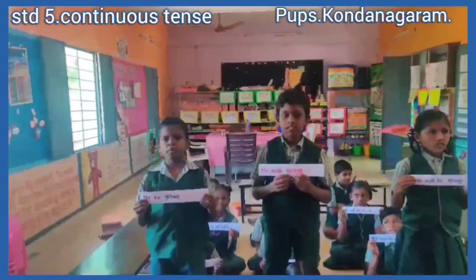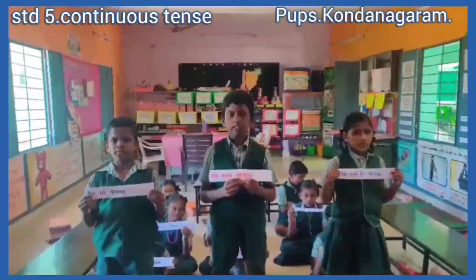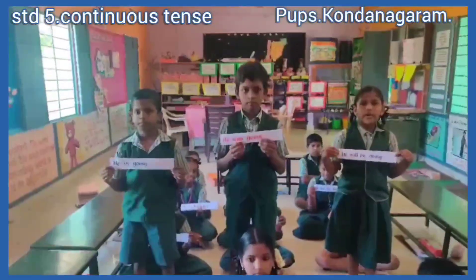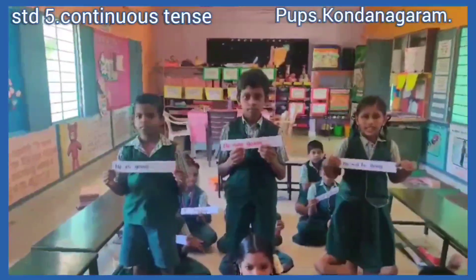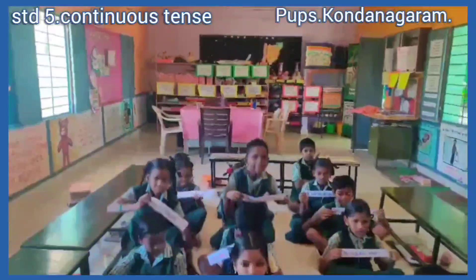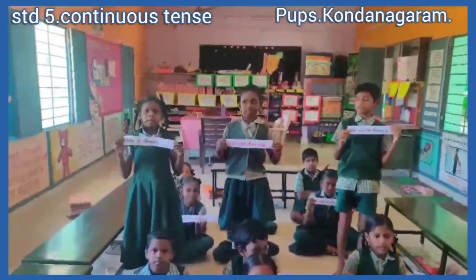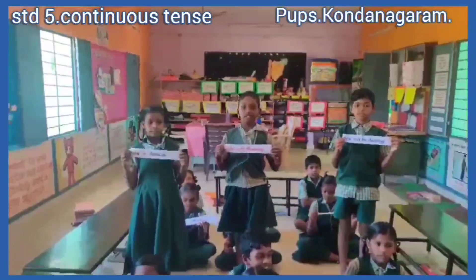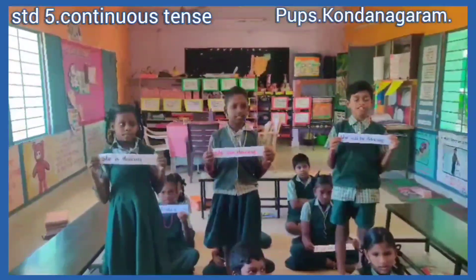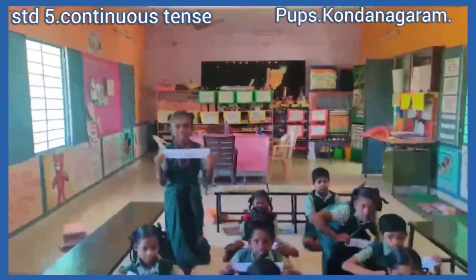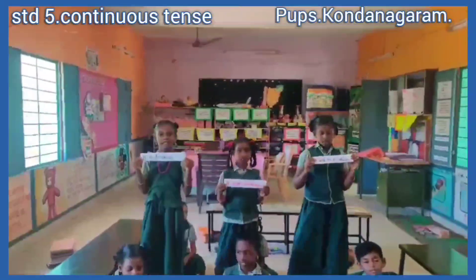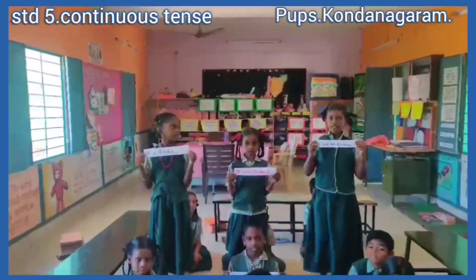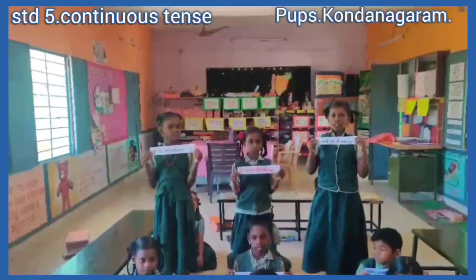He is going — present continuous. He was going — past continuous. He will be going — future continuous. She is dancing — present continuous. She was dancing — past continuous. She will be dancing — future continuous. It is drinking — present continuous. It was drinking — past continuous. It will be drinking — future continuous.